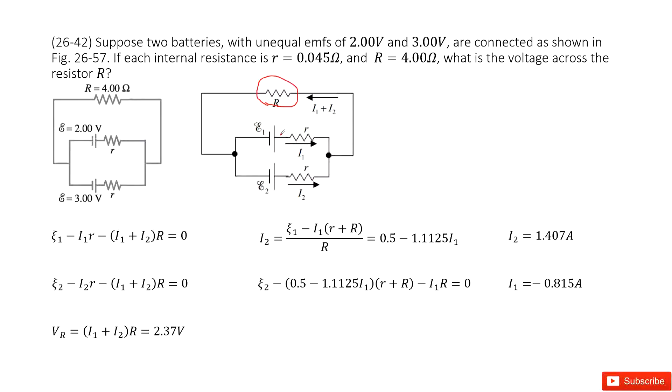Because this has two batteries, our strategy is to use Kirchhoff loops. So the first loop is from epsilon 1 to I1 to I1 plus I2, this way.